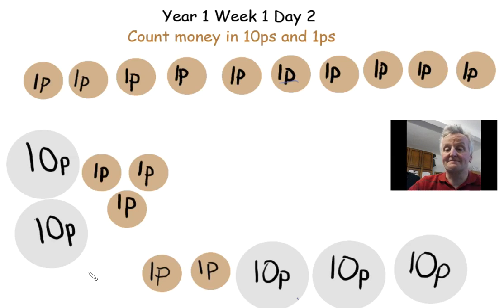Okay, so let's look at the first part of our problem. Our first part of our problem is how many coins do I have at the top of my page? So let's have a count. We have one, two, three, four, five, six, seven, eight, nine, ten. So we have ten coins or ten pence.